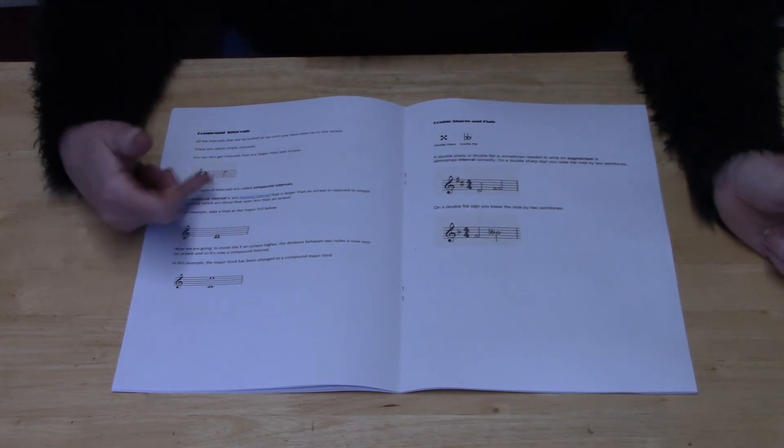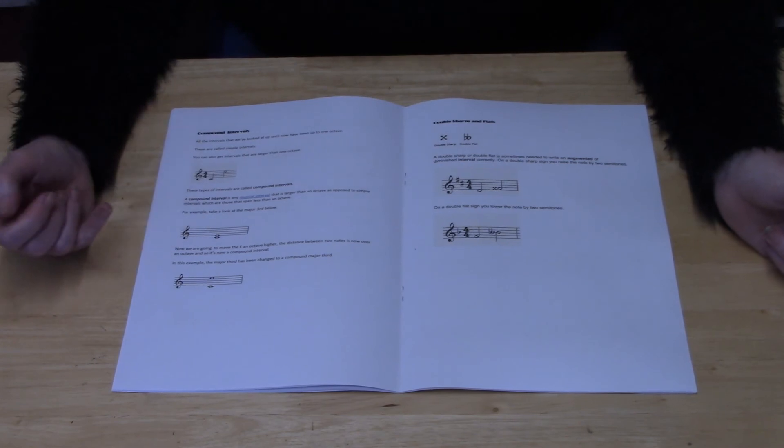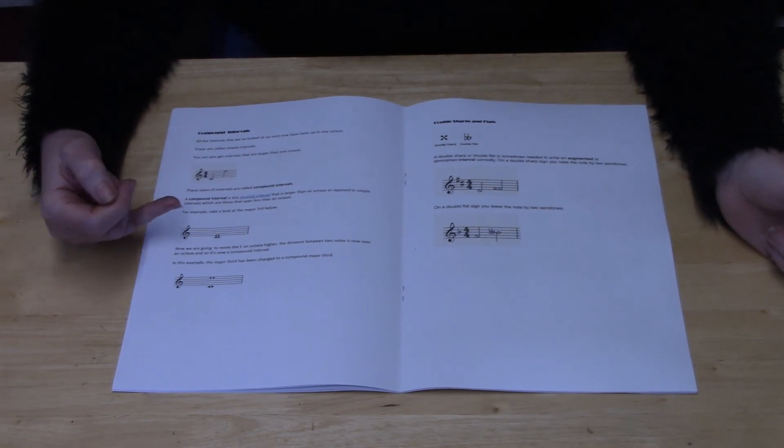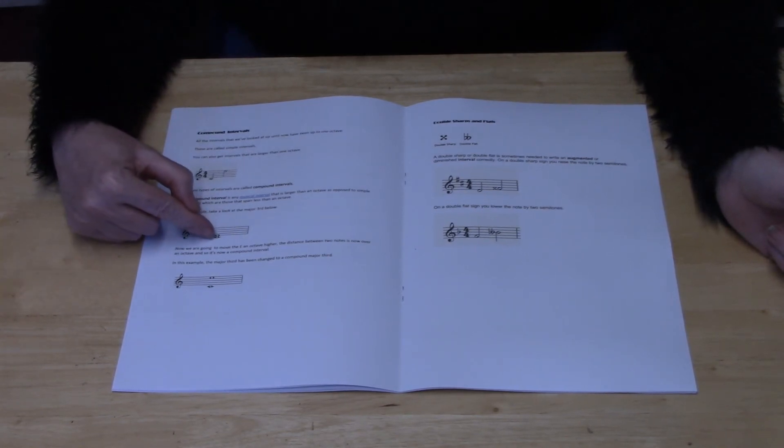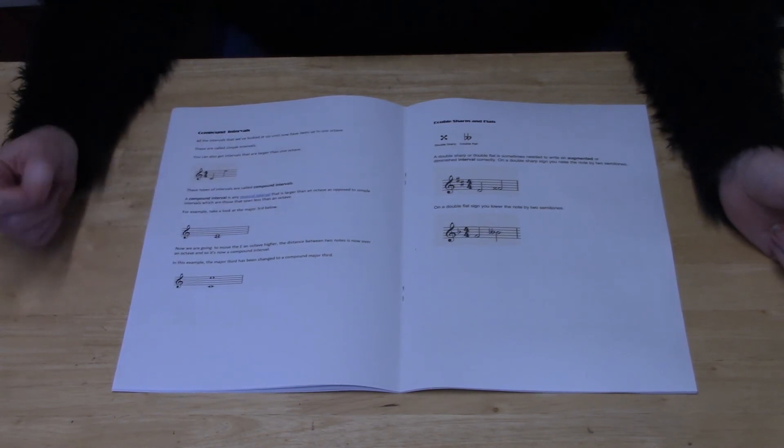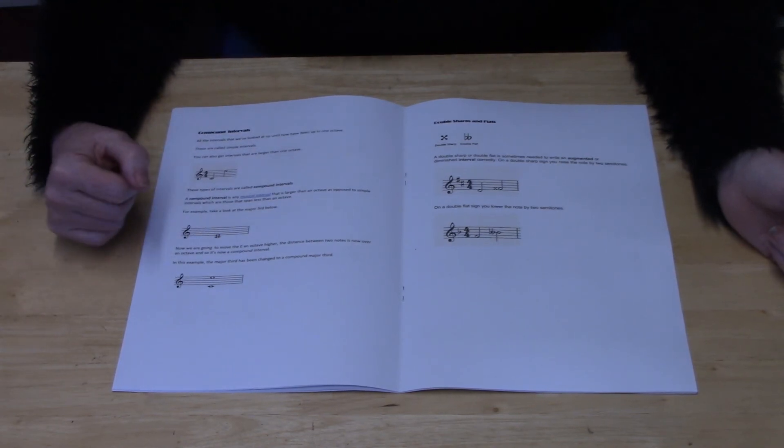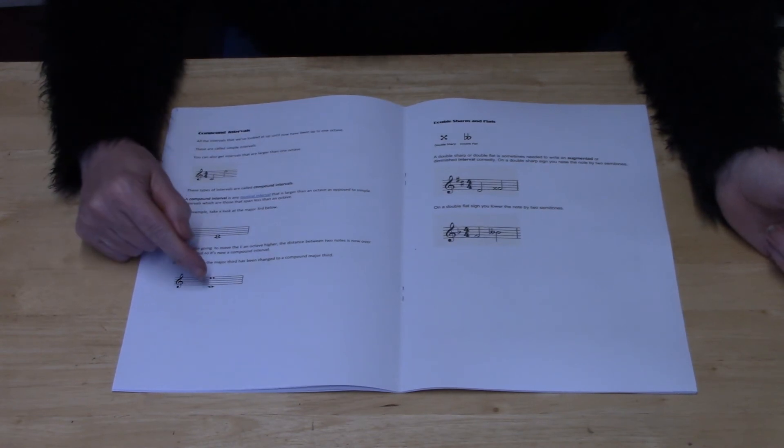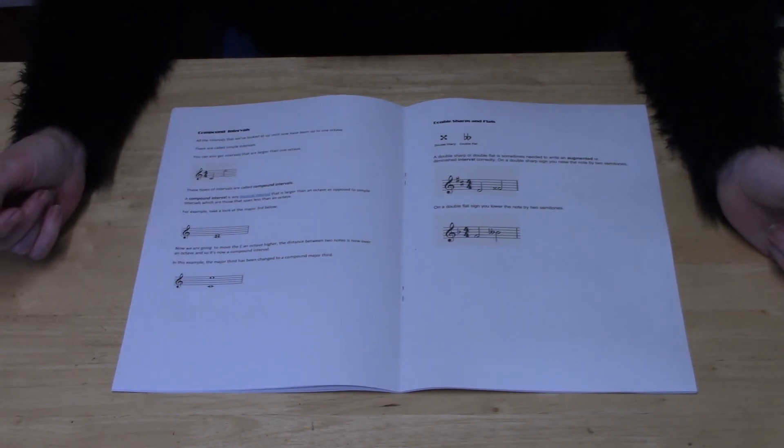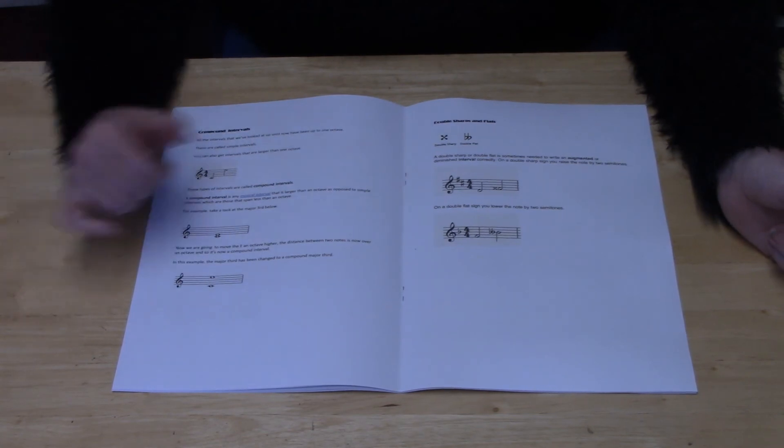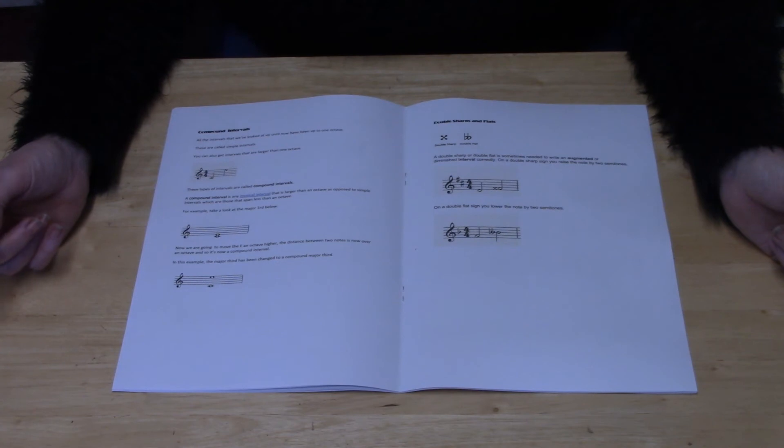Here's an example of how you can make one interval into a compound interval. You've got the notes C and E, which is a simple interval very close to each other. If you want to make that into a compound interval, you raise the E by an octave so it's more than an octave higher. That gives you a compound major third.